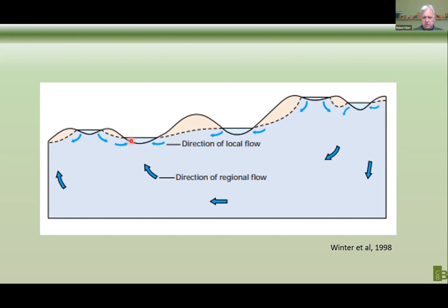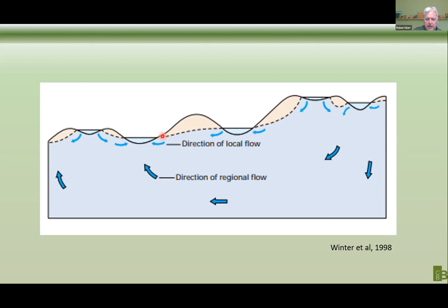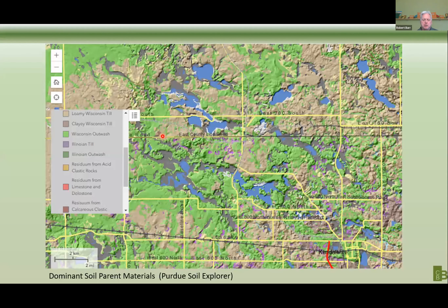Understanding this tells us that this is our supply of water. What's actually coming off the slope is minimal — particularly when you start thinking about evapotranspiration. It ends up being a small number, and Siavash is going to look into that when he talks about the climatic changes we've been experiencing. With an understanding that this system is groundwater driven, the dominant soil parent materials map — or think surficial geology — makes more sense.